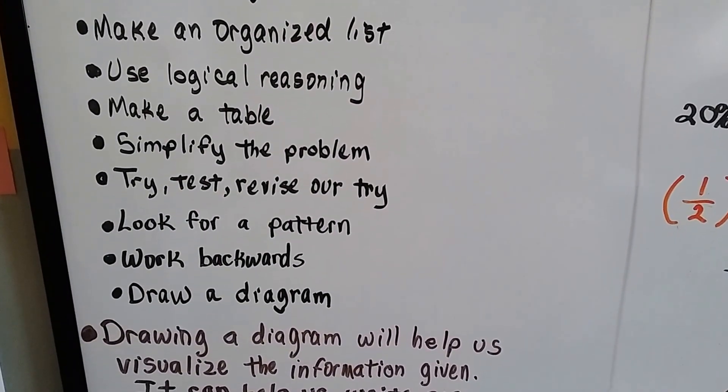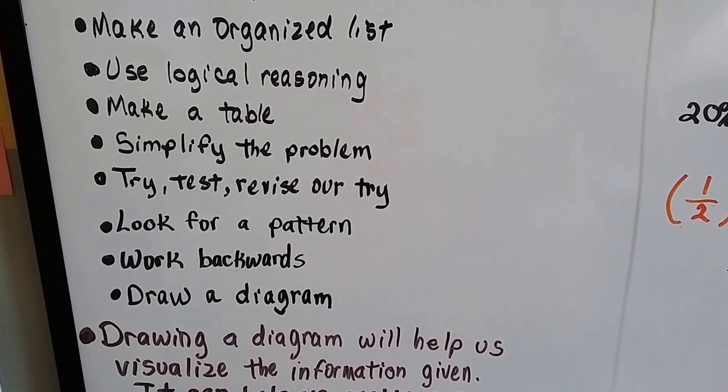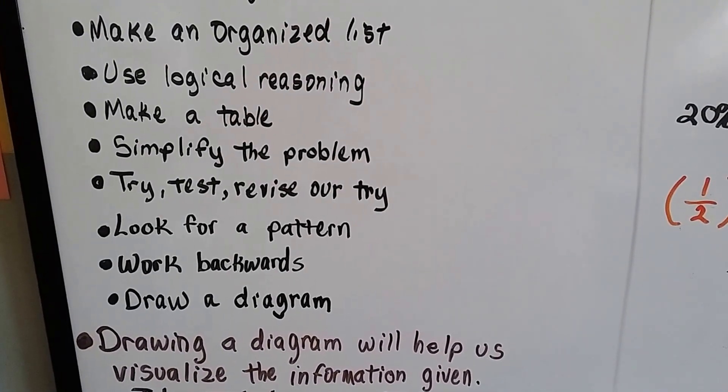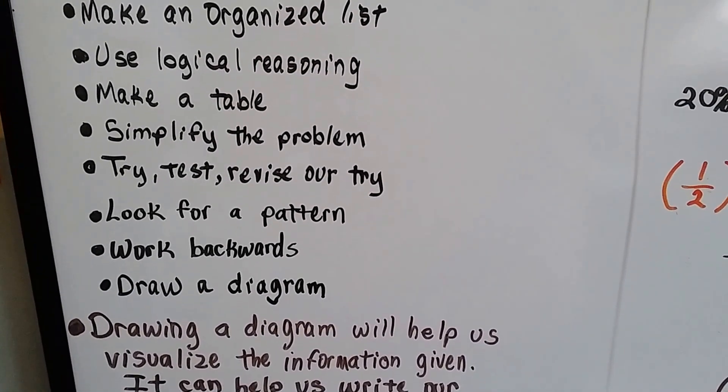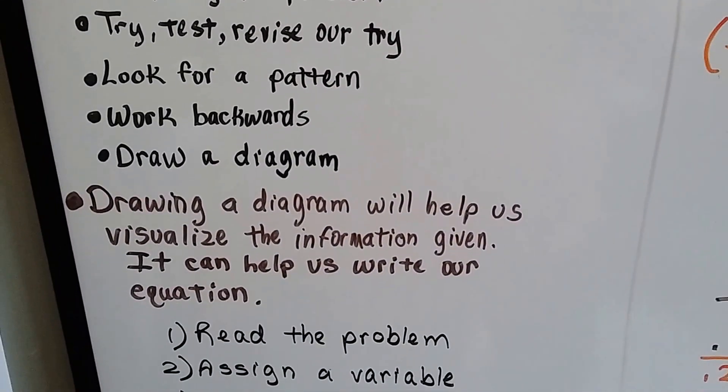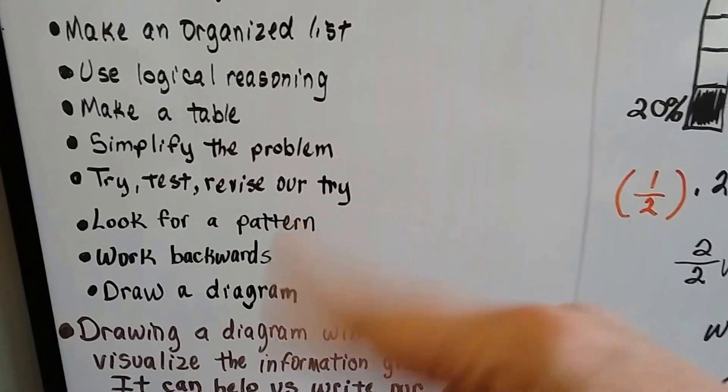make an organized list, use logical reasoning, make a table. We could simplify the problem, or we could try, test, revise our try. So it's like guess and test, and then revise our guess. We can look for a pattern, we can work backwards, or we can try drawing a diagram. Or we could use a combination of these.